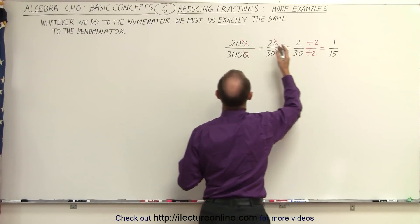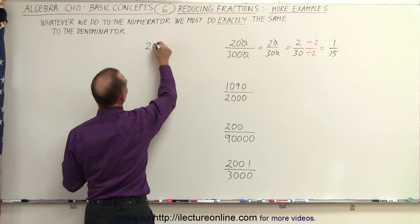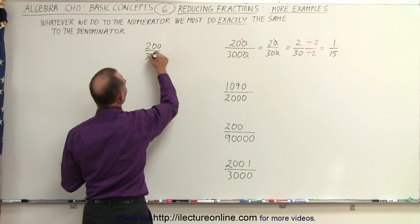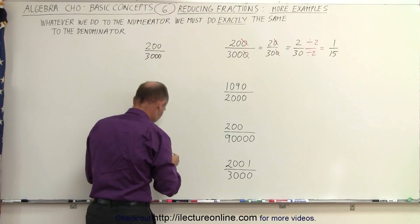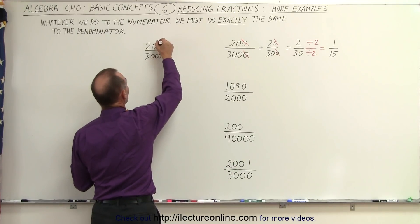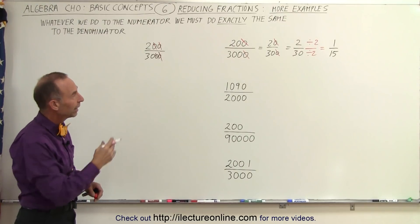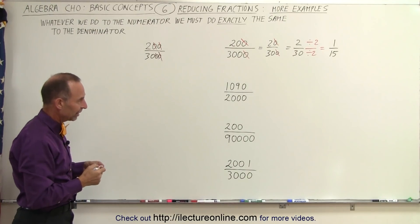But the key here is, when we look at this in the beginning, notice we could have essentially done the following. We could have taken the number 200 divided by 3000, because essentially that's what a fraction is. It's basically division. We can say we can divide the numerator by 10 twice, we can divide the denominator by 10 twice, and we end up with 2 divided by 30, and then we would continue to simplify that.